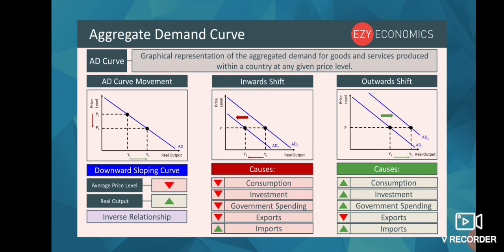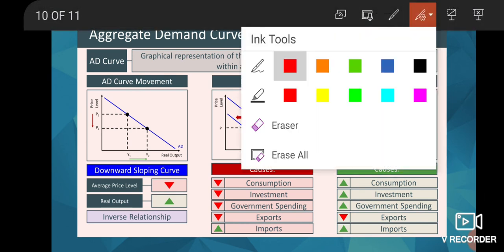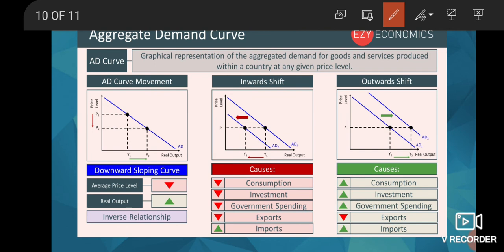Now please look at this. The first one represents a normal AD curve, showing as we discussed that as price level increases, aggregate demand decreases. Now look at the middle one. If you remember, national income Y is basically your consumption expenditure plus your investment expenditure plus your government expenditure plus your exports minus imports.